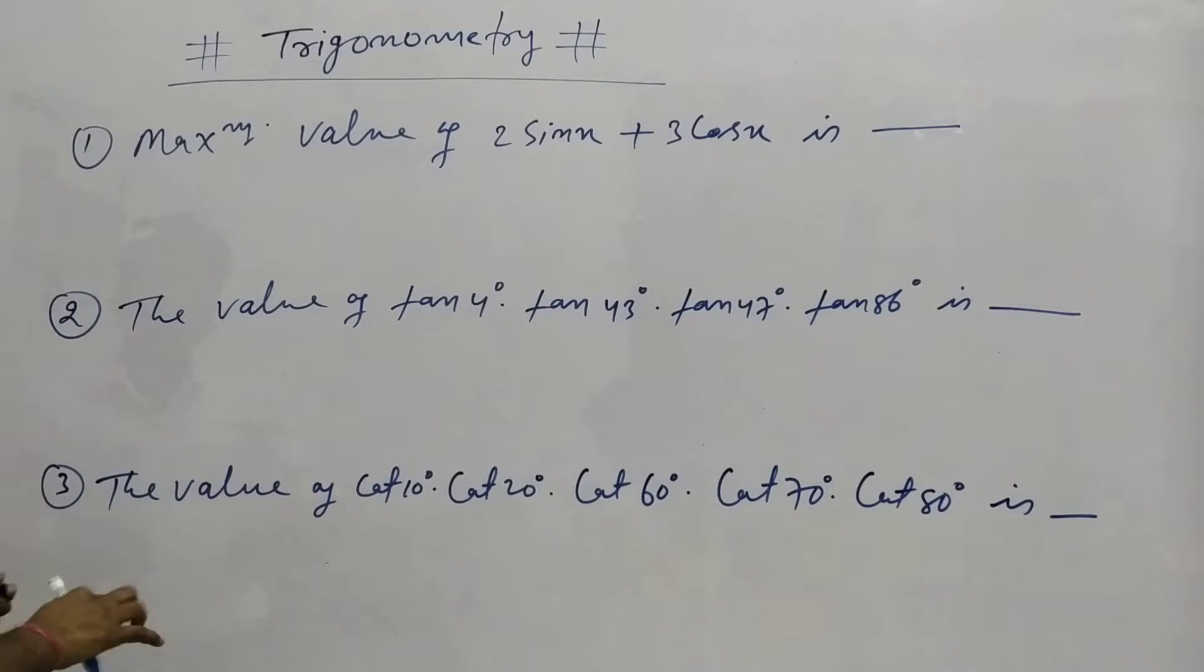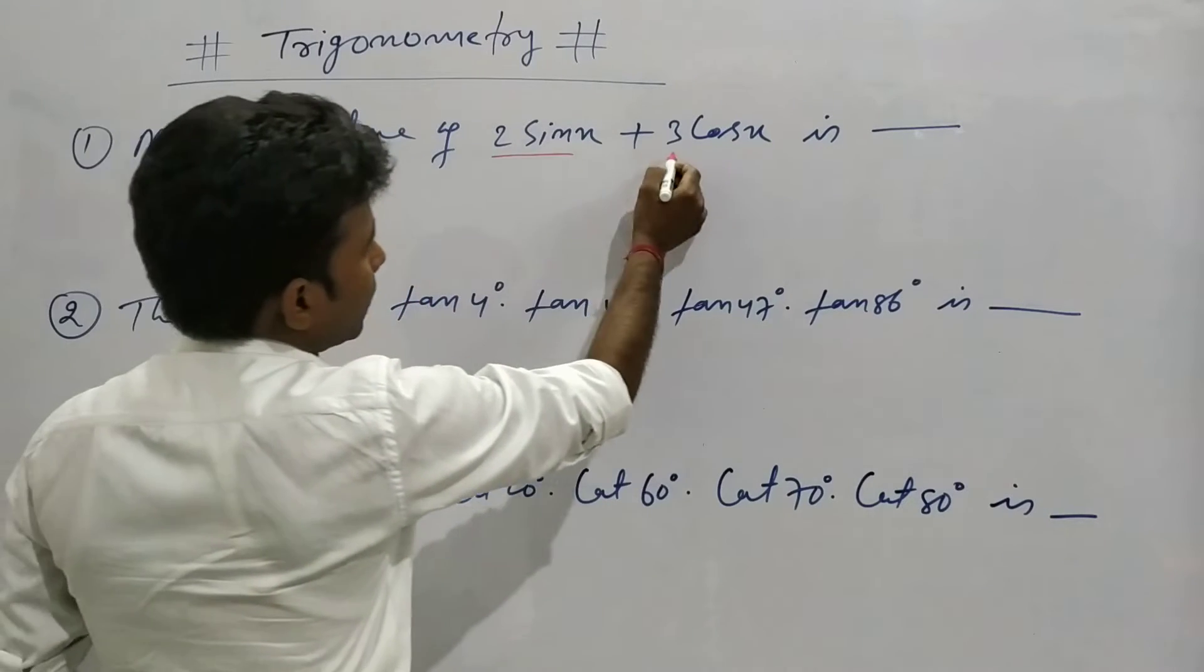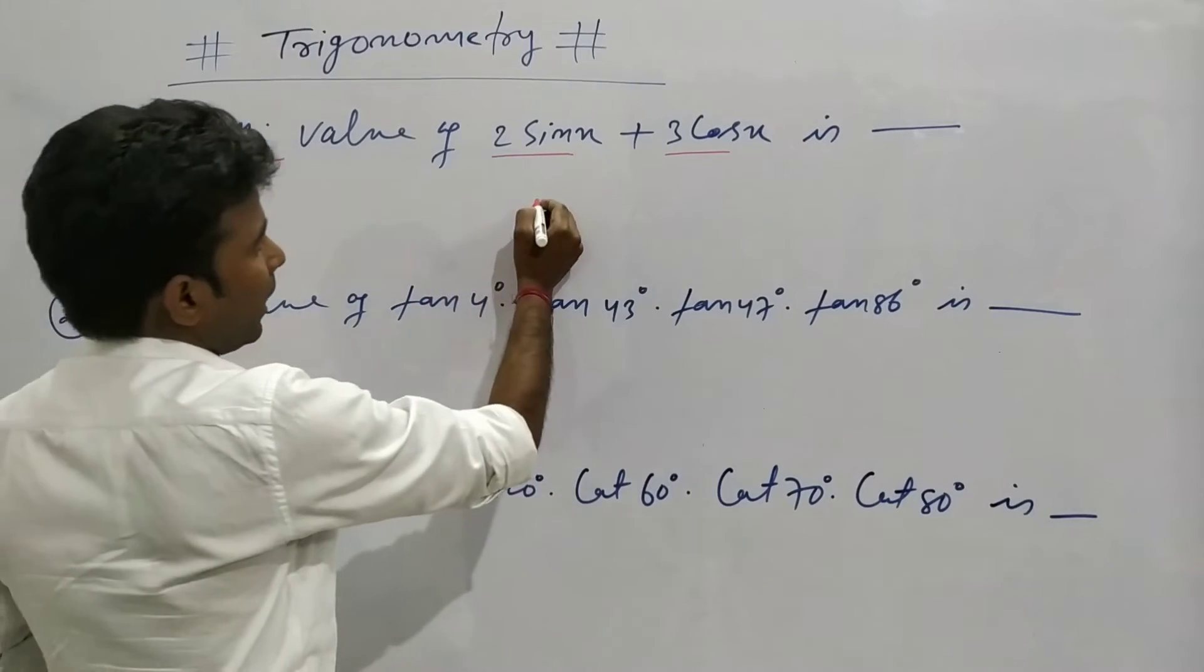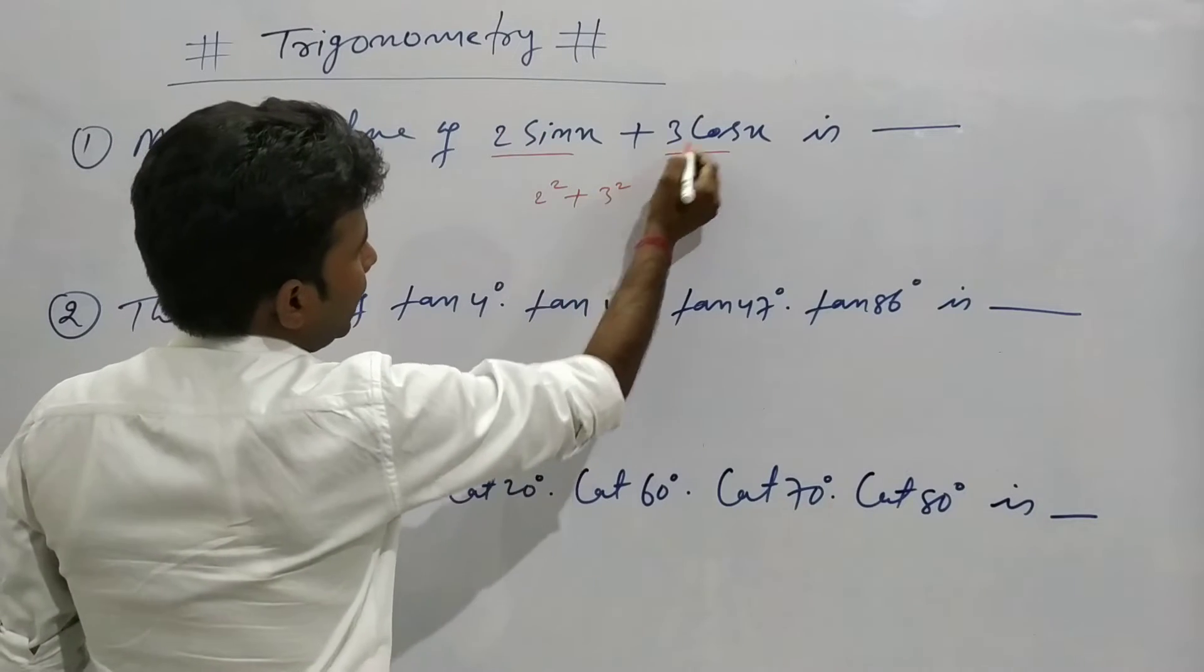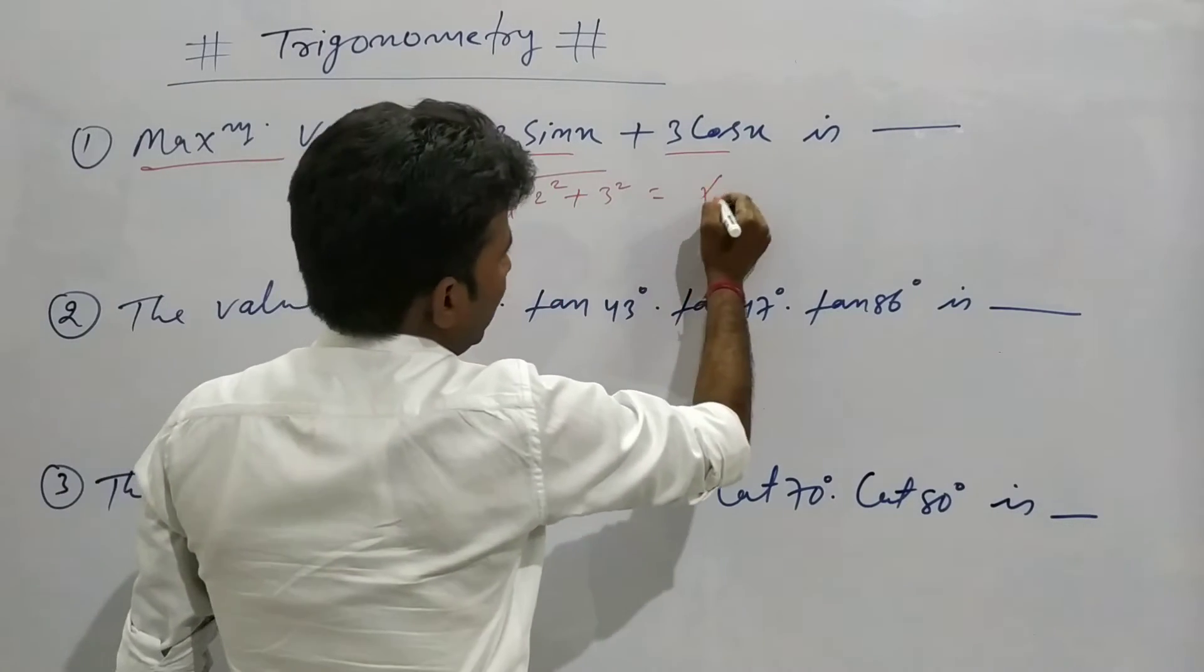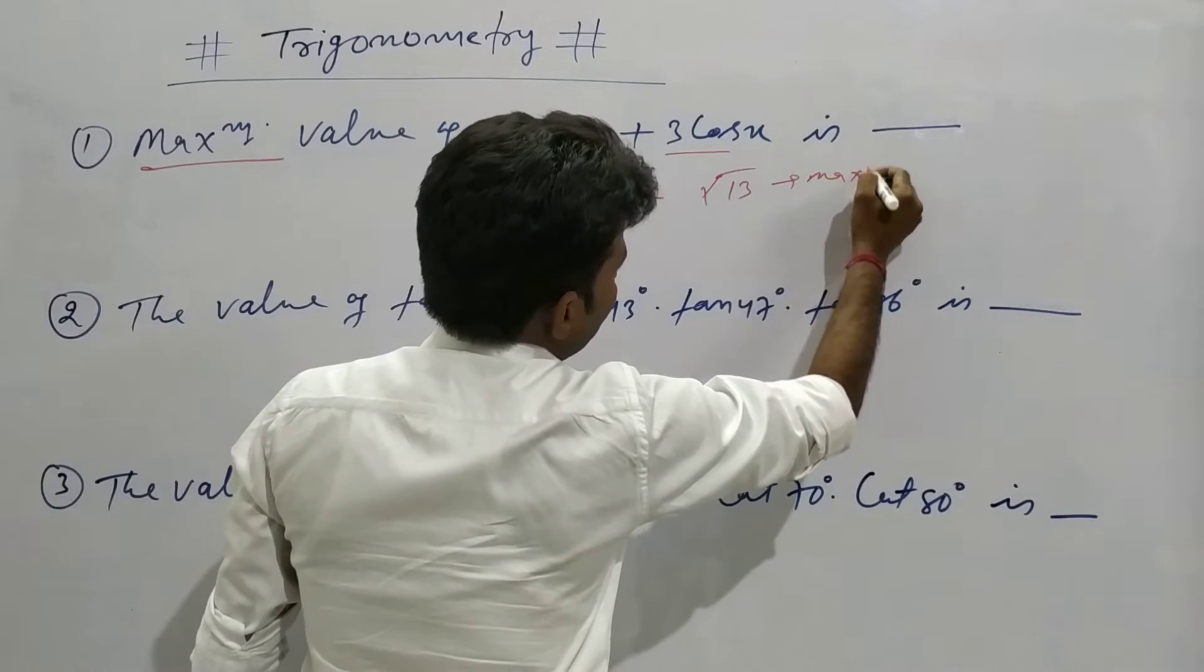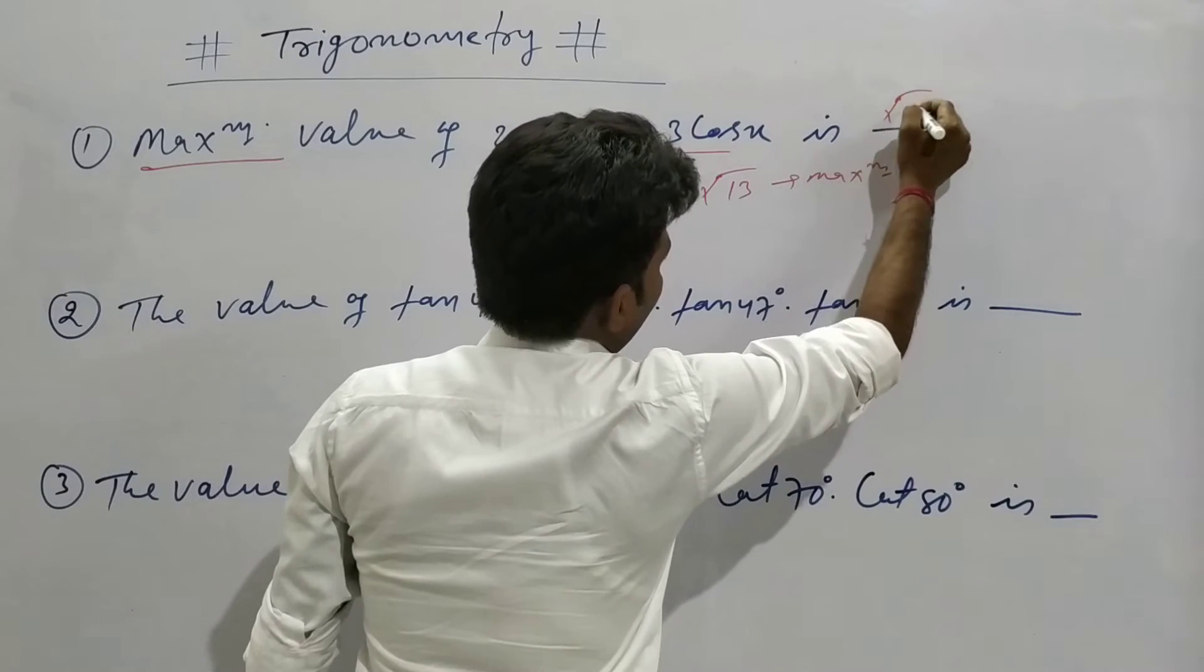The first question asks: find the maximum value of 2sin(x) + 3cos(x). Using the trick, we take 2 squared plus 3 squared. 3 times 3 is 9, 2 times 2 is 4, which equals 13. So root 13 will be the maximum value.